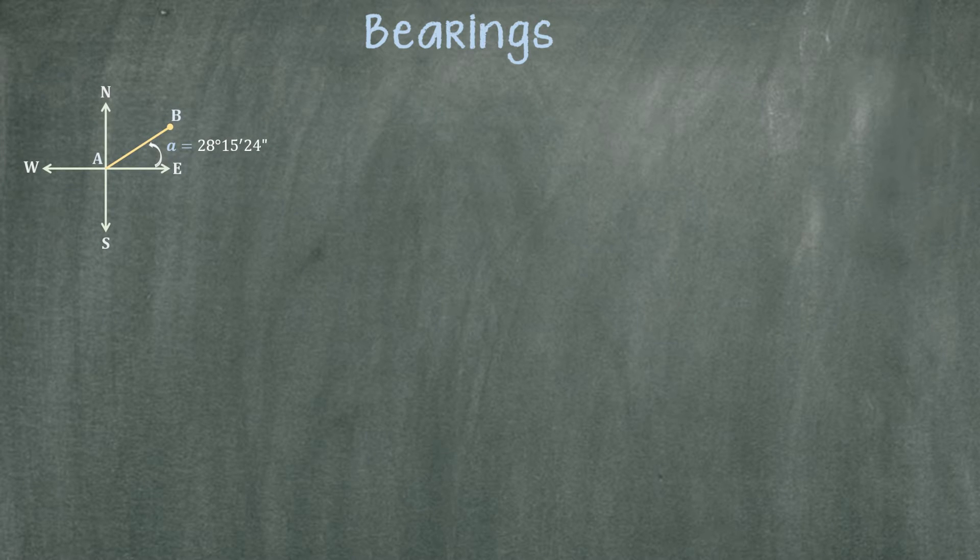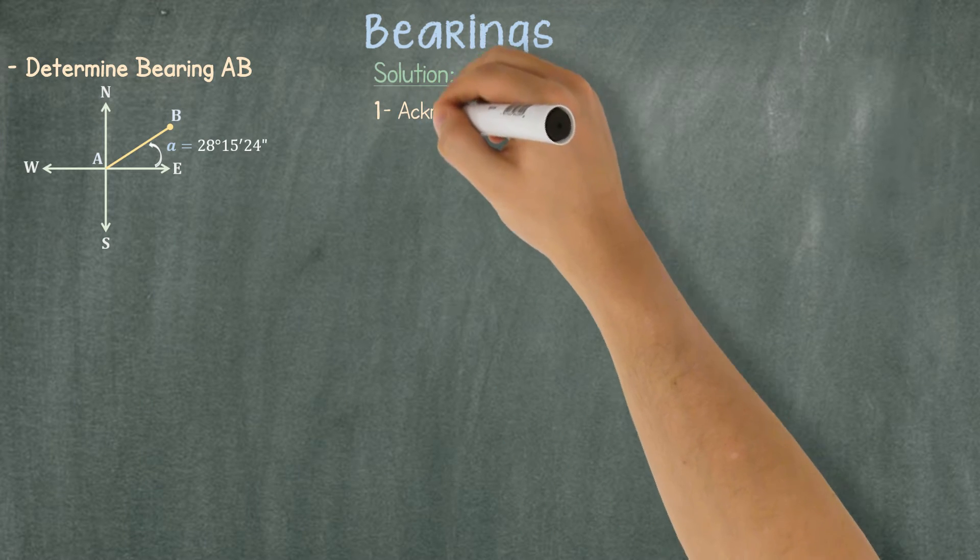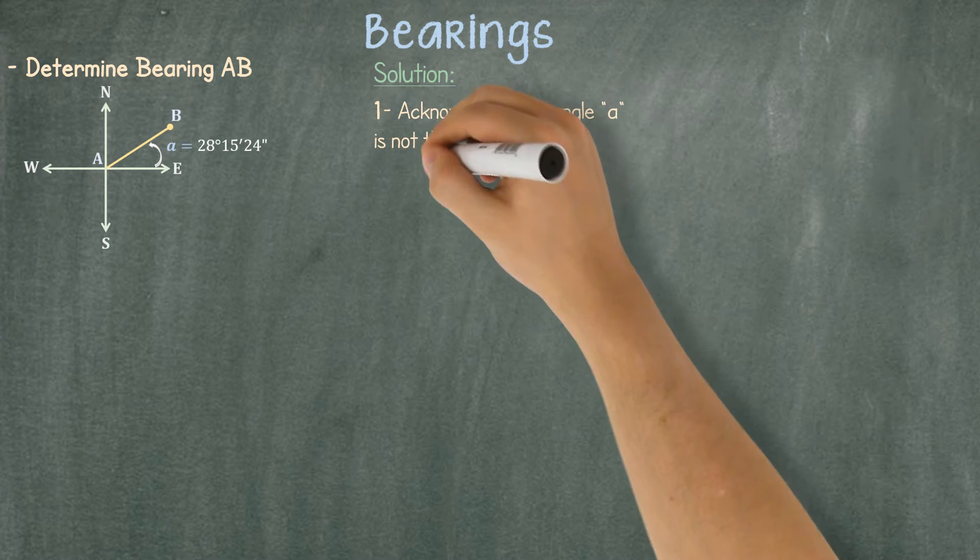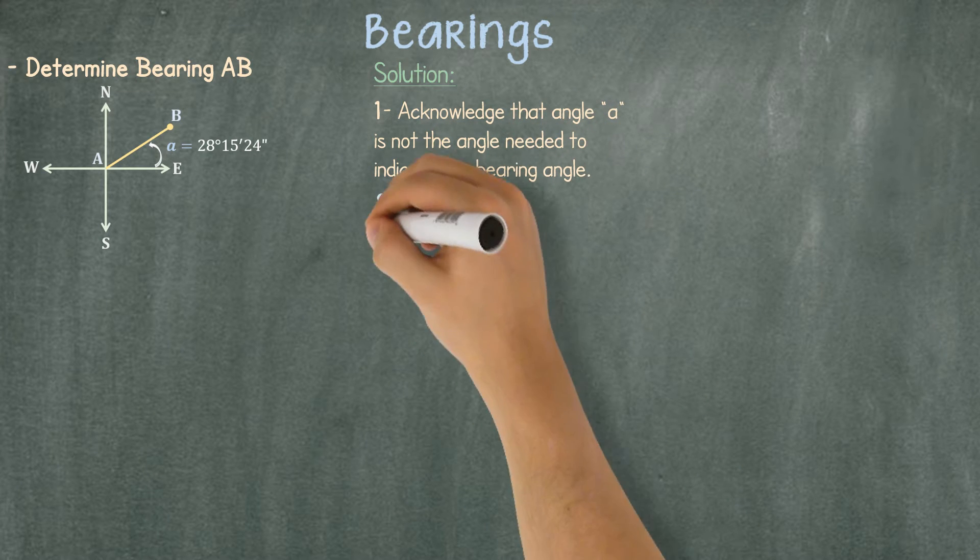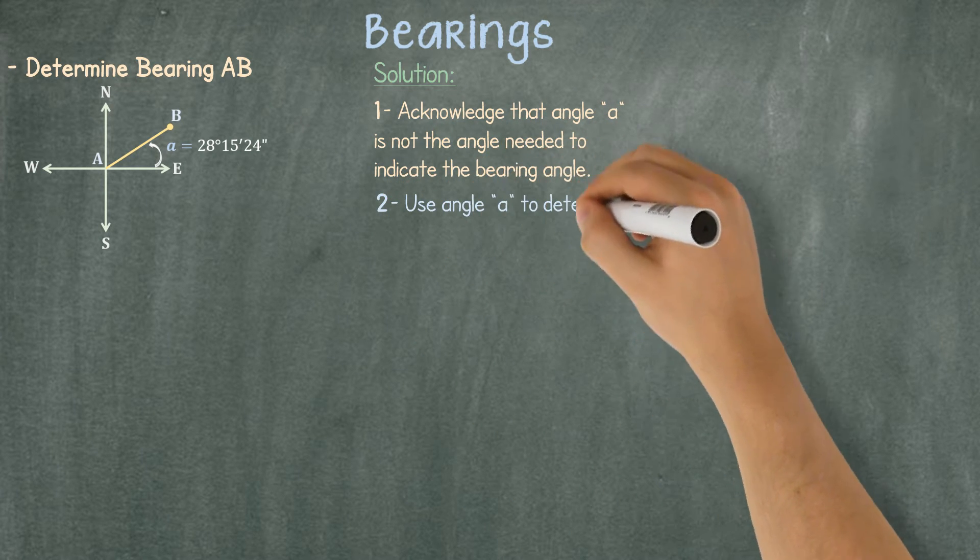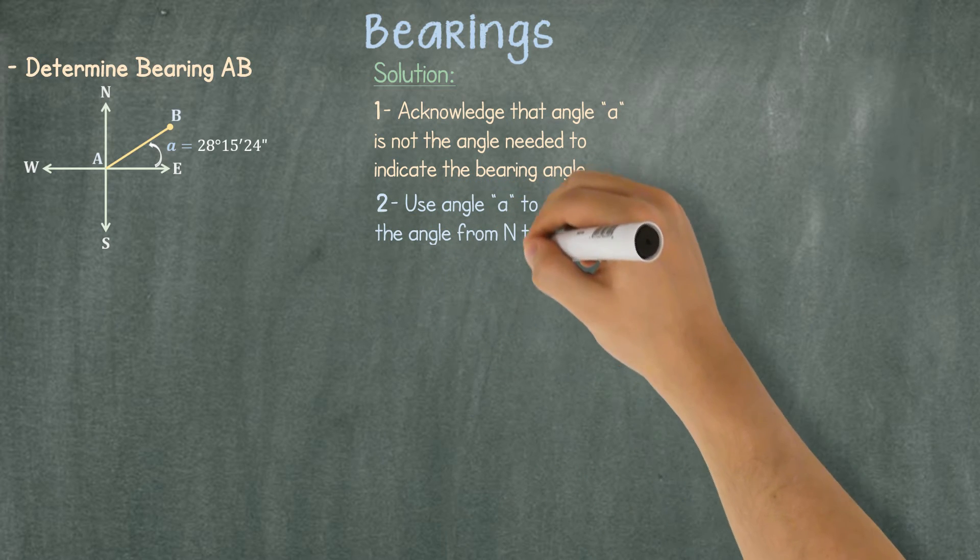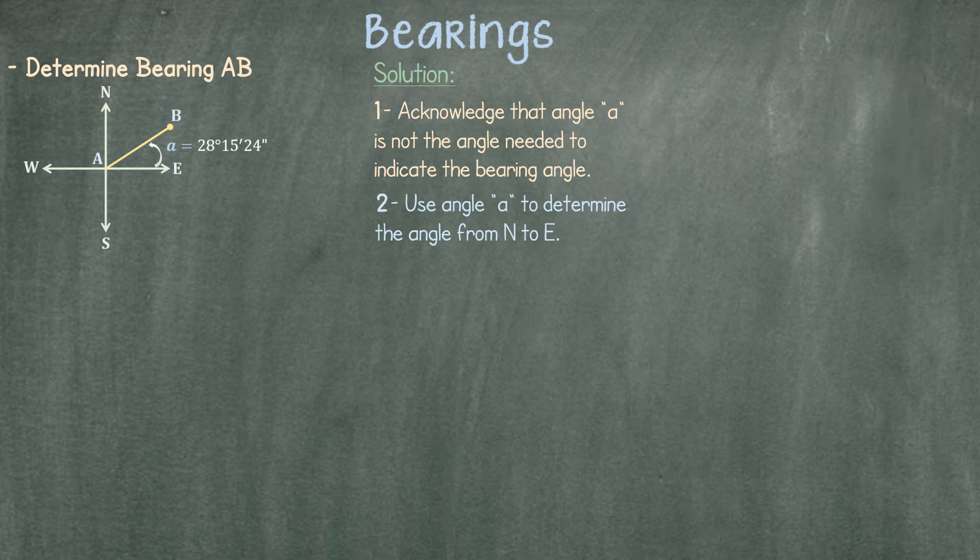Given the following information, determine bearing AB. First, we need to acknowledge that angle A is not the angle we need to indicate the bearing. Instead, we use angle A to determine the angle from north to east. We will call it angle B and its value will be determined by subtracting angle A from 90 degrees.